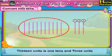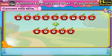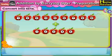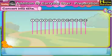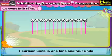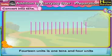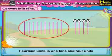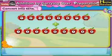Now, 9 units plus 5 units — if we add them with the help of straight lines, we get 14 units. 14 units is the same as 1 ten and 4 units.